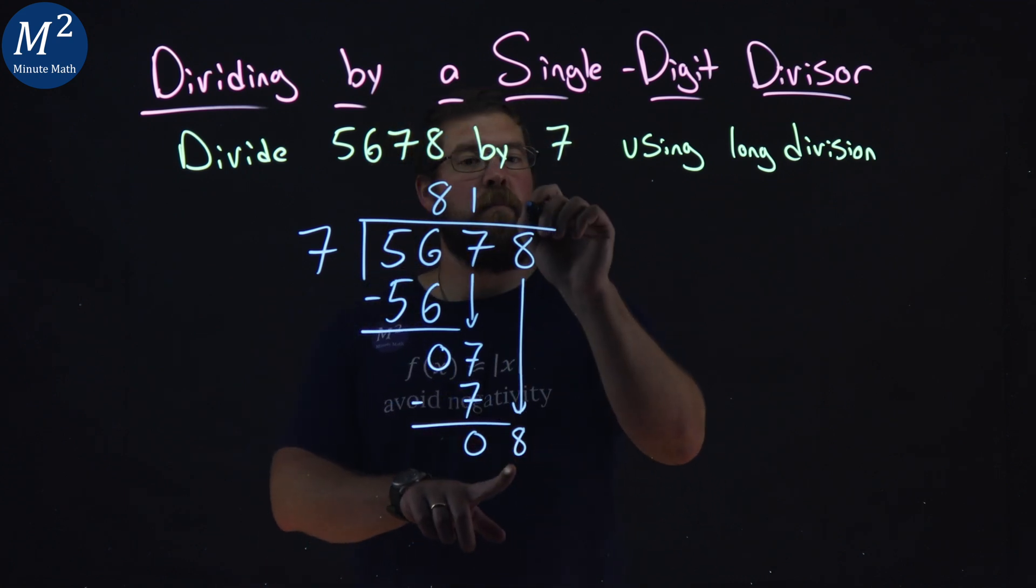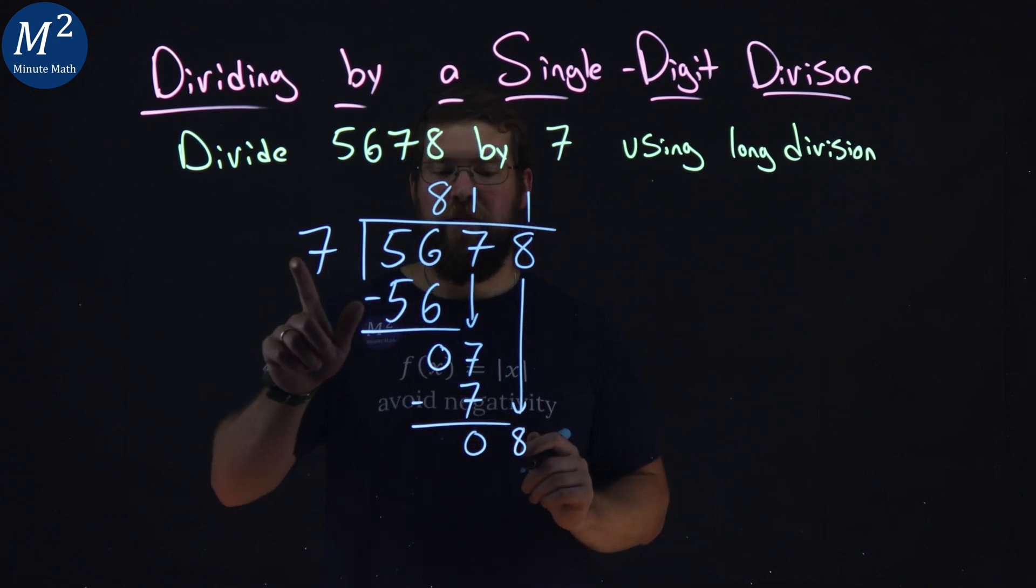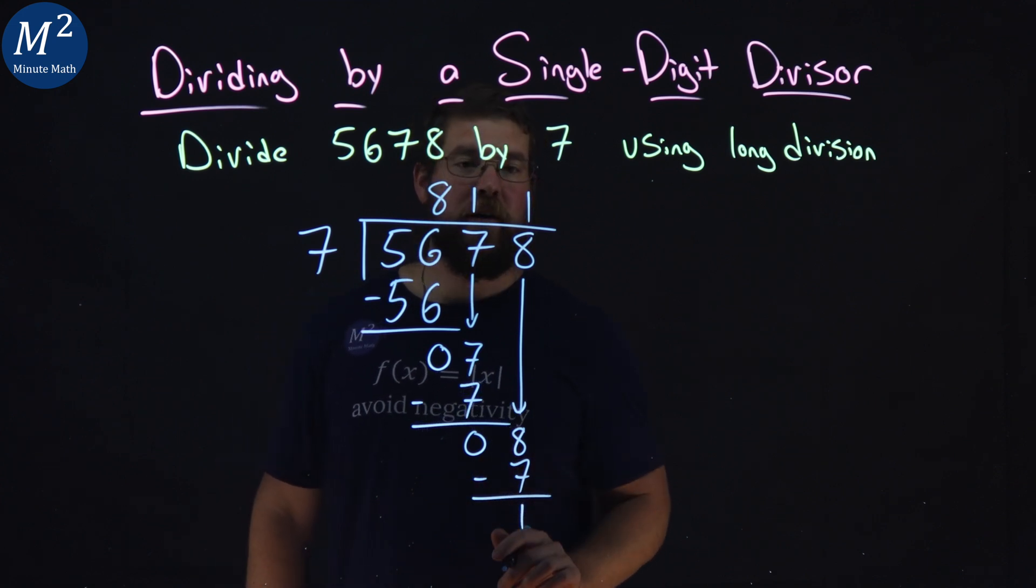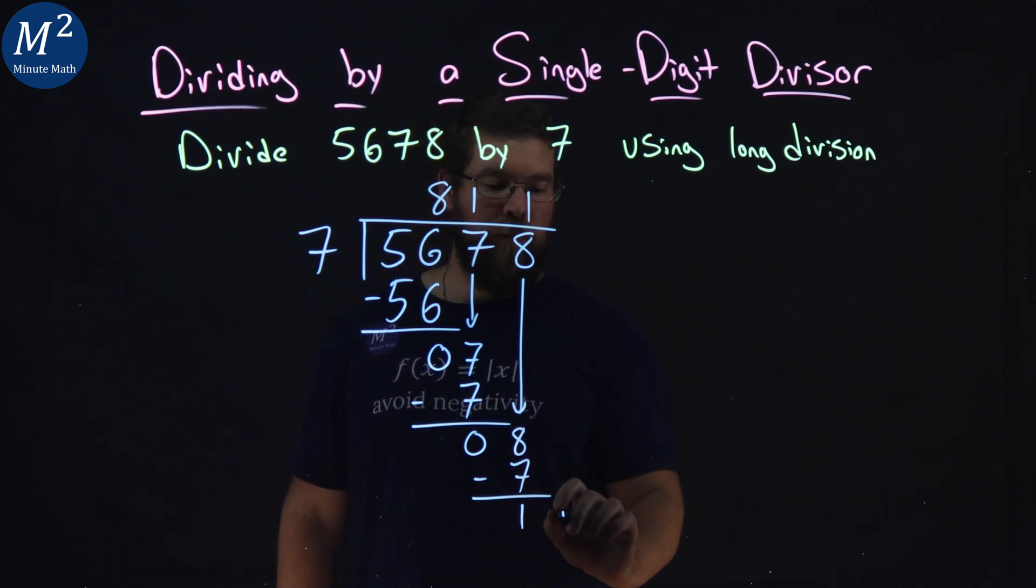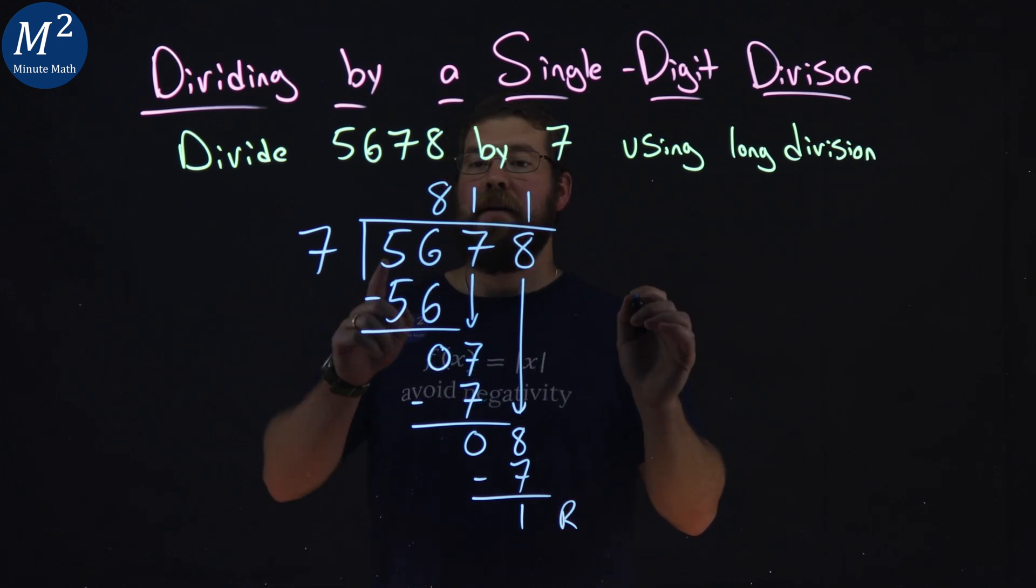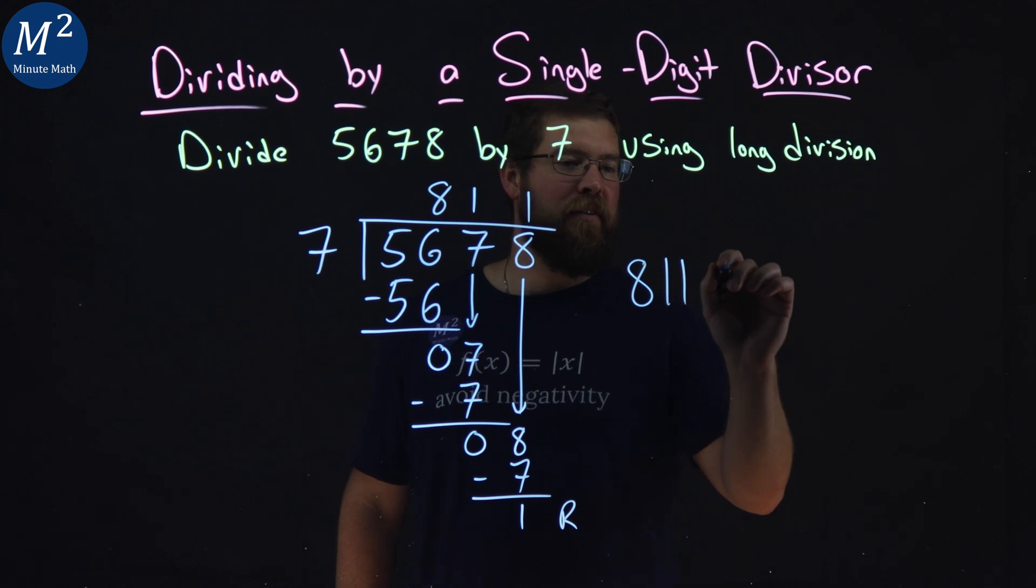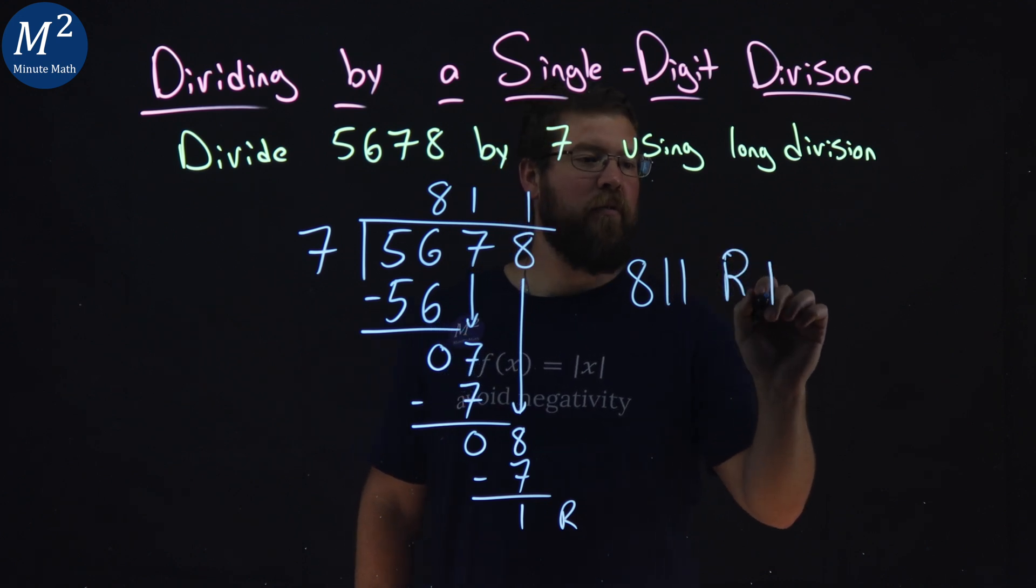7 goes into 8 one time. 1 times 7 is 7. We subtract the 2. We have a 1 here left over, and that's our remainder.